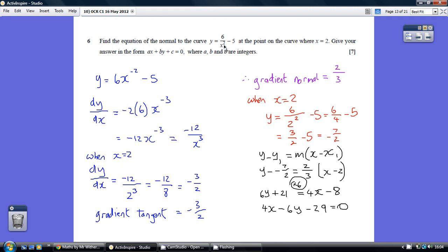So taking the x squared upstairs, we've got 6x to the minus 2 minus 5 being what y equals. Now if we differentiate that, so we multiply by the current power and reduce the power by 1, we get this.